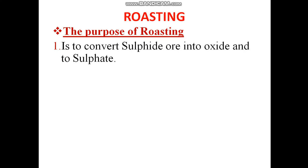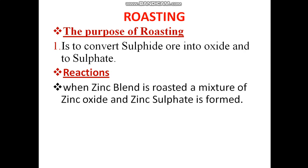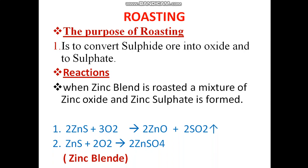Let's have a look at the reaction. When zinc blende is roasted — that is, heated in the presence of air — we get a mixture of zinc oxide and zinc sulphate. Here, zinc blende (ZnS) heated in the presence of oxygen gives zinc oxide and sulphur dioxide. In the second reaction: ZnS + 2O₂ gives zinc sulphate.